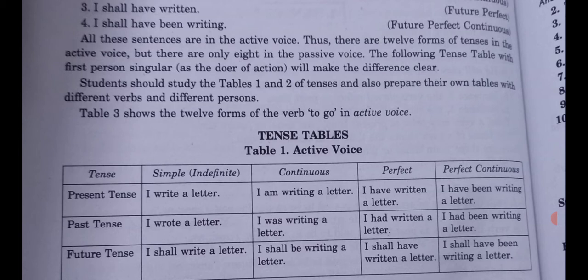For future tense: I shall write a letter — will or shall plus the first form of the verb. Use 'shall' with first person pronouns; for all other subjects use 'will'. First person pronouns are I and we.